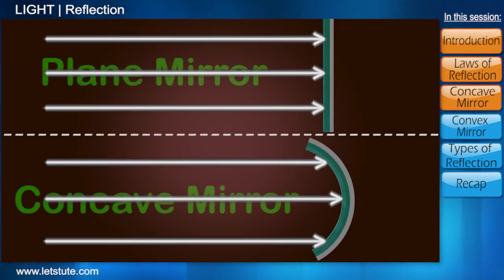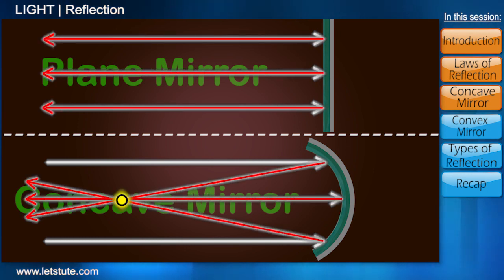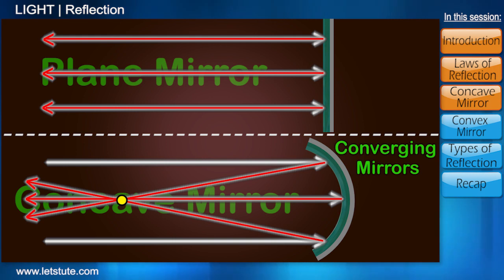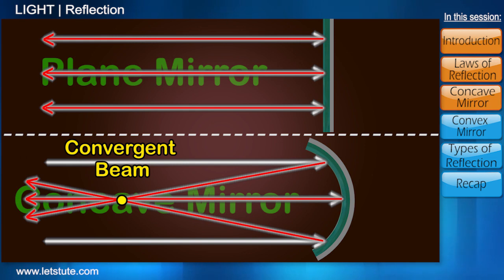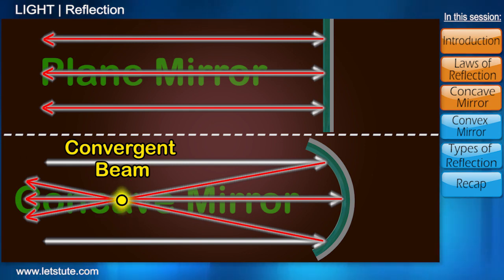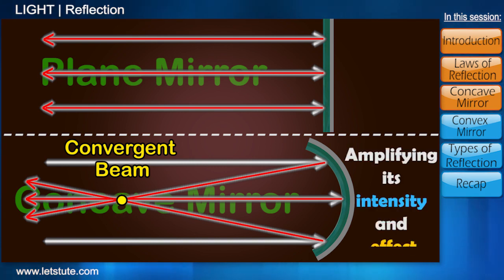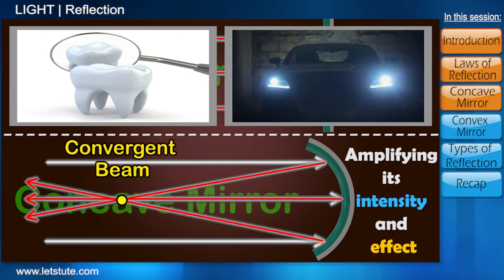Unlike plain mirrors, when light rays are incident onto concave mirrors, they tend to converge at a point, and for this reason they are also called converging mirrors. Naturally, the beam of light this mirror produces is called a convergent beam. This property of the mirror causes light to be focused or concentrated at a point, thereby amplifying its intensity, which gives it magnifying and focusing capabilities.